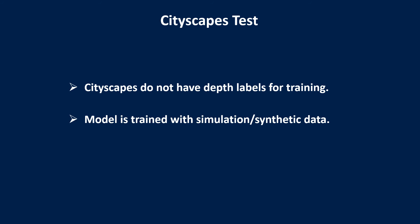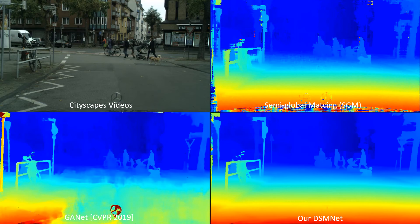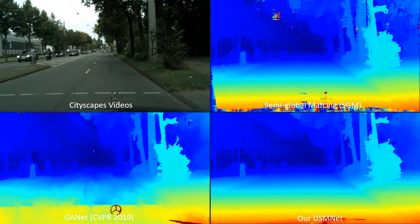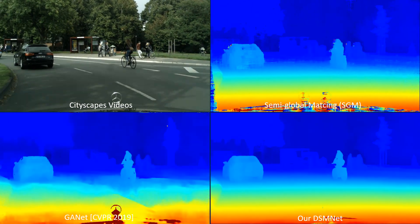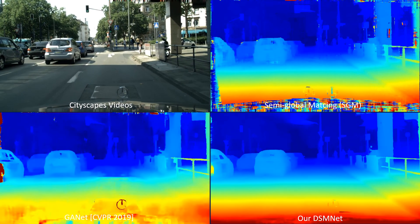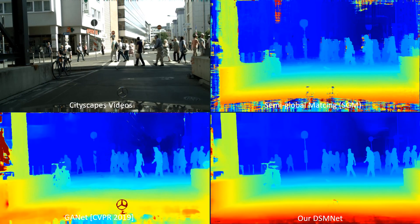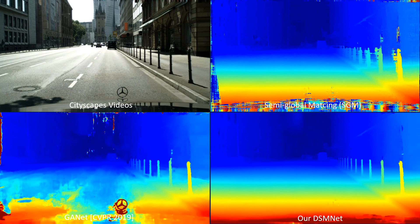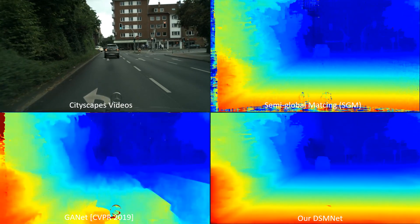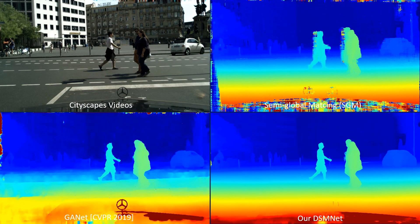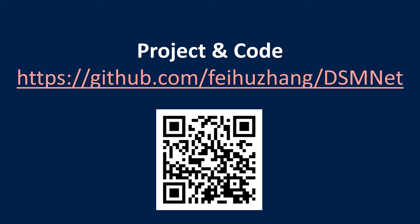This is a simple video demo captured using the Cityscapes dataset. Since the Cityscapes dataset has no depth labels for training, models are trained only with synthetic data. We compare DSMNet with the popular traditional semi-global matching and the state-of-the-art GANet. DSMNet is far better in real driving scene tests, producing accurate depth results at object boundaries, occlusions, and large road areas. The source code is now available on GitHub. Thanks for your attention.